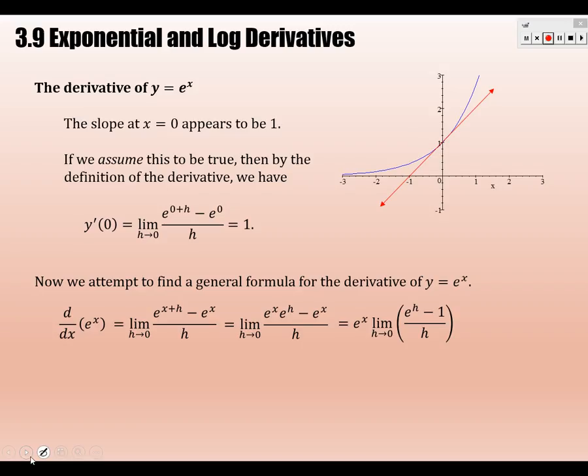And what did we say this limit is? If we assume this limit, we started by making this assumption. We just need to resolve this limit, which involves no x's at all. So apparently, at the very least, you realize that e^x, the derivative of e^x is e^x times some constant. But what did we start by thinking that that constant was?